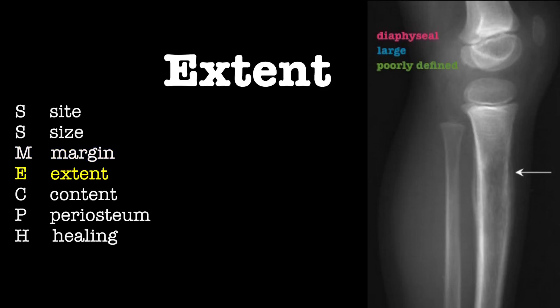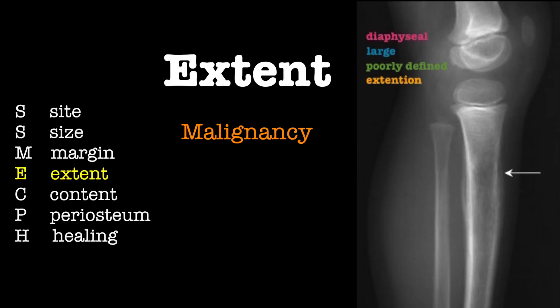E is for extent. Think malignancy if there is evidence of extra-osseous involvement. In this x-ray, there may be soft tissue involvement. One could do an MRI to confirm this.